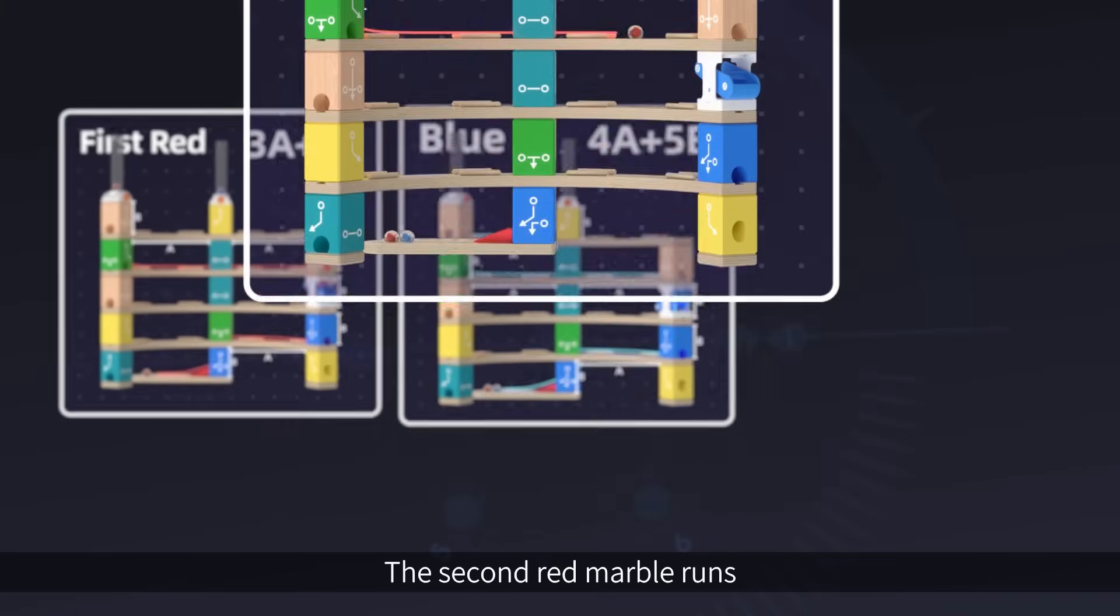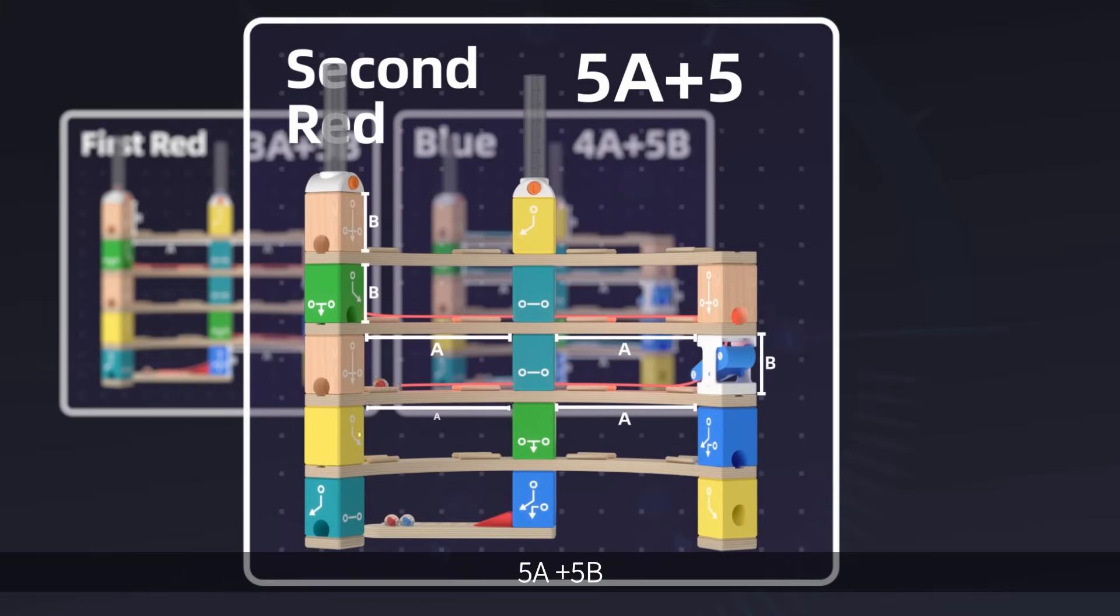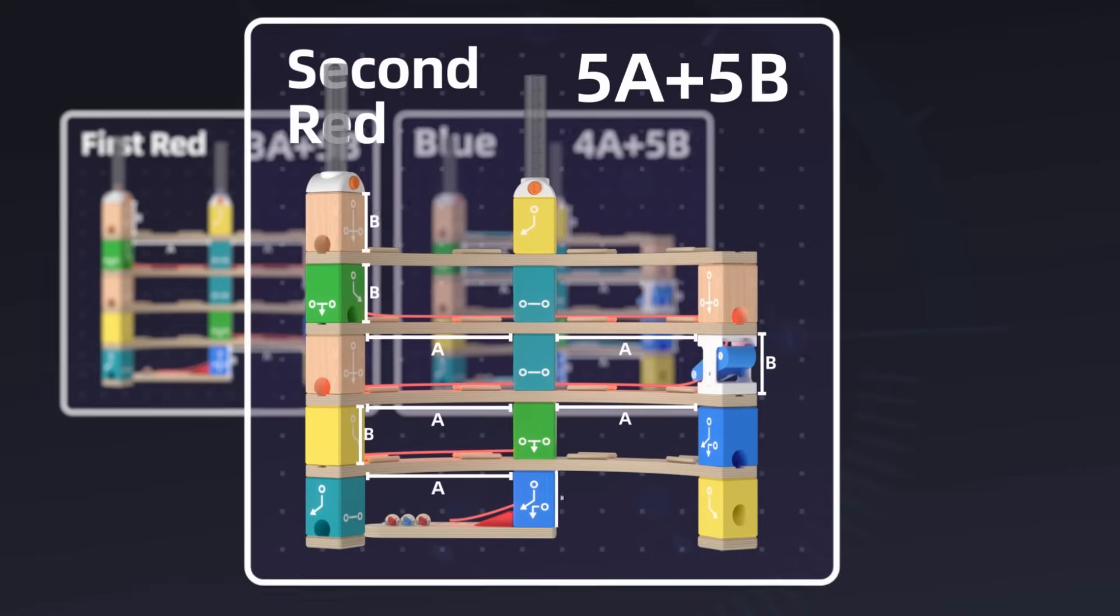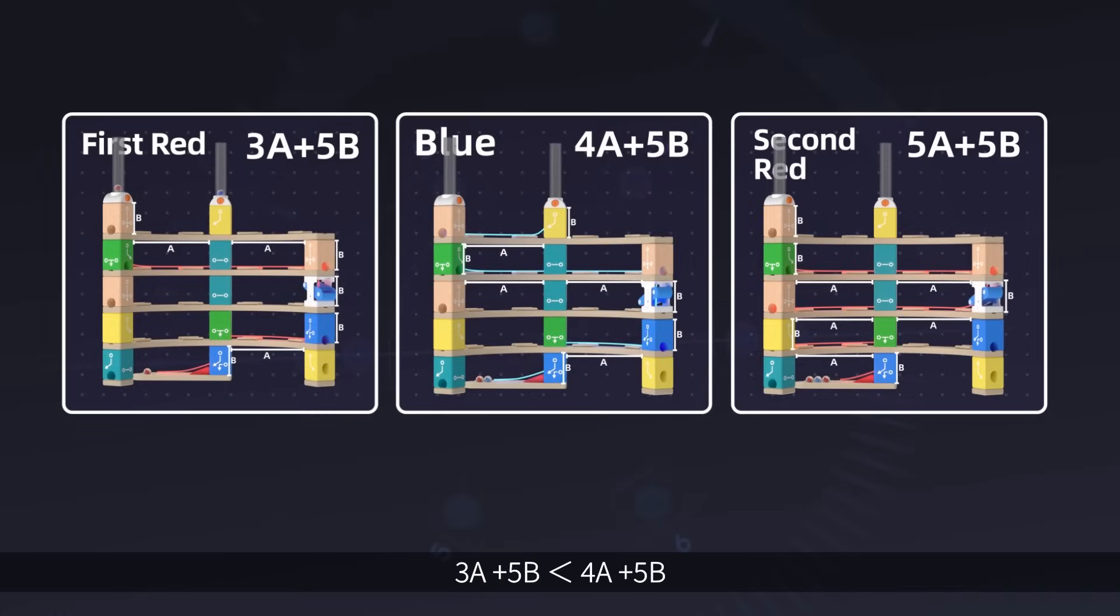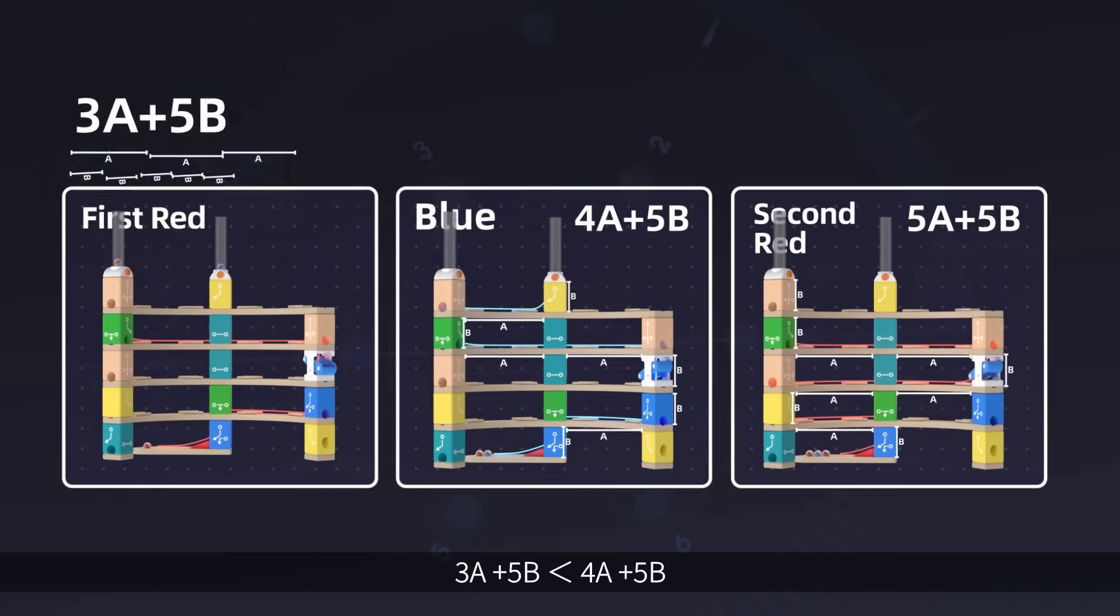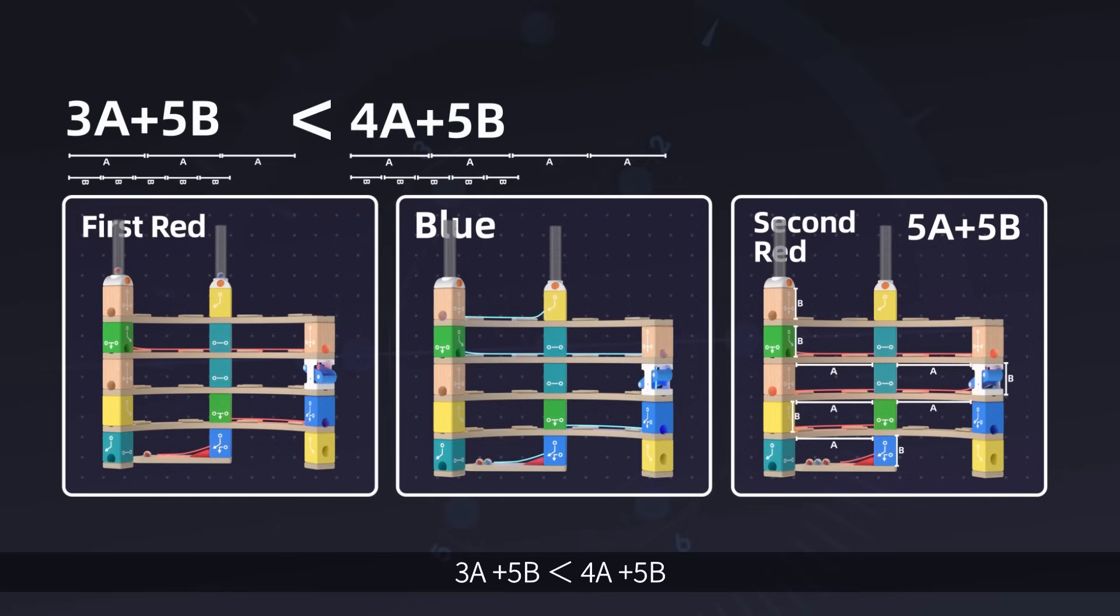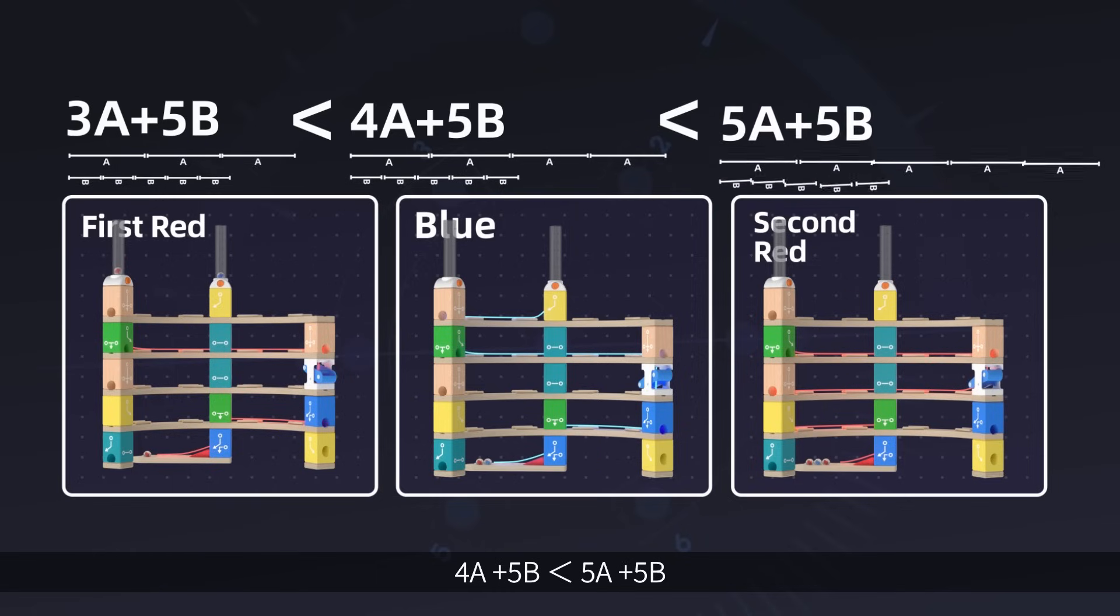The second red marble runs 5A plus 5B. So we can see that 3A plus 5B is less than 4A plus 5B.